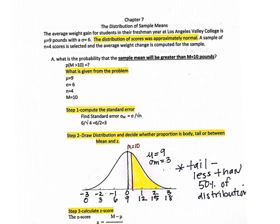What we want to know is: what is the probability the sample mean will be greater than m equals 10 pounds? We want to know the probability that people will gain 10 pounds or more. So we have mu equals 9, population standard deviation equals 6, sample size n equals 4, and sample mean equals 10. The first step is to compute the standard error.